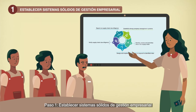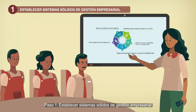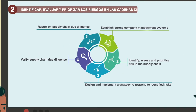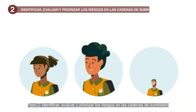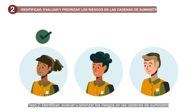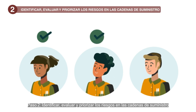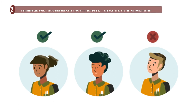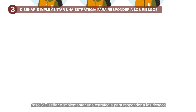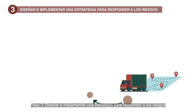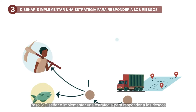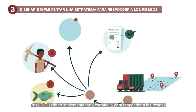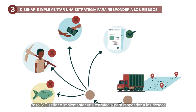Step 1: Establish strong company management systems. Step 2: Identify, assess and prioritise risks in supply chains. Step 3: Design and implement a strategy to respond to risks.